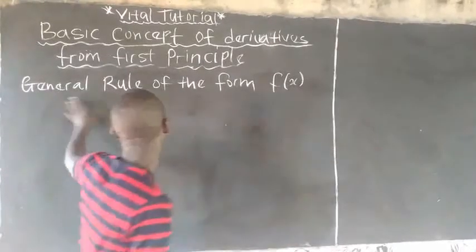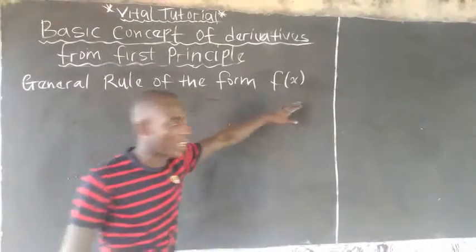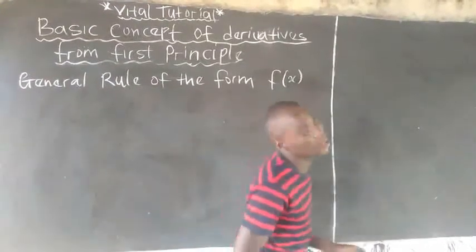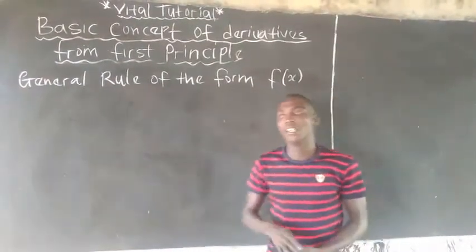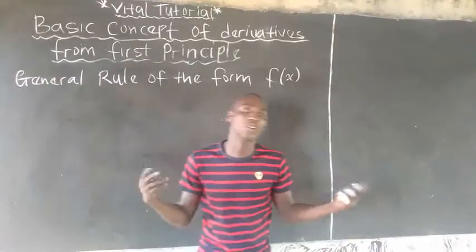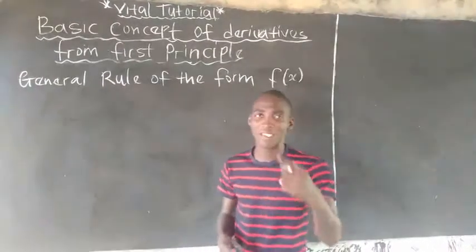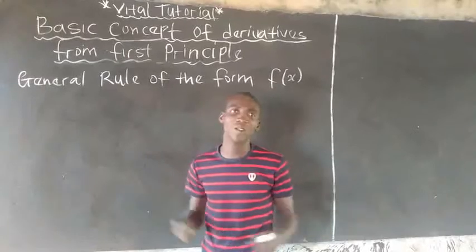This is the general rule of the form f(s), that is the function of s. Many of us know the derivative of cos s. If I say what is the derivative of cos s, actually it will tell me that it is minus sin s. Yes, it is correct.